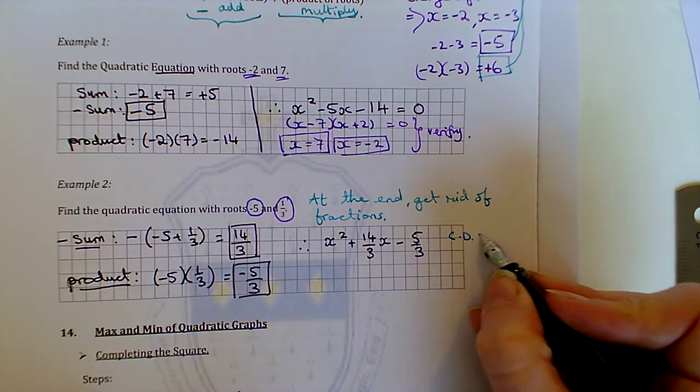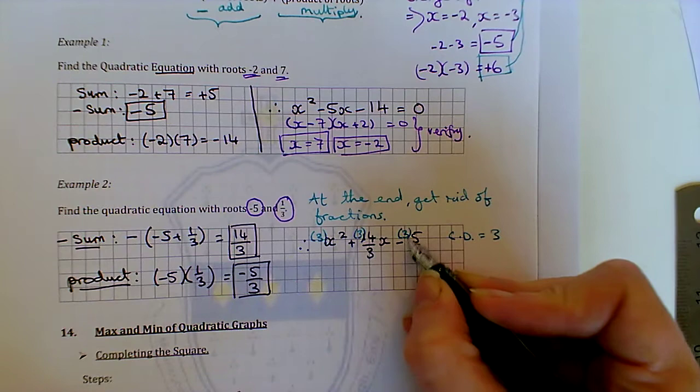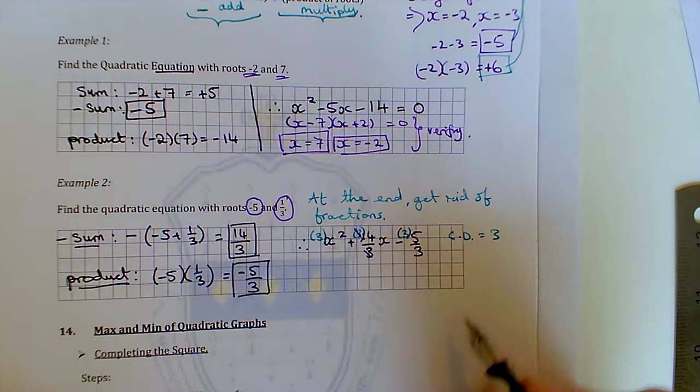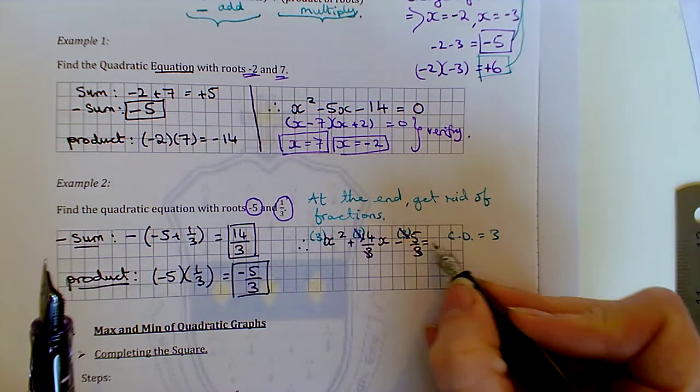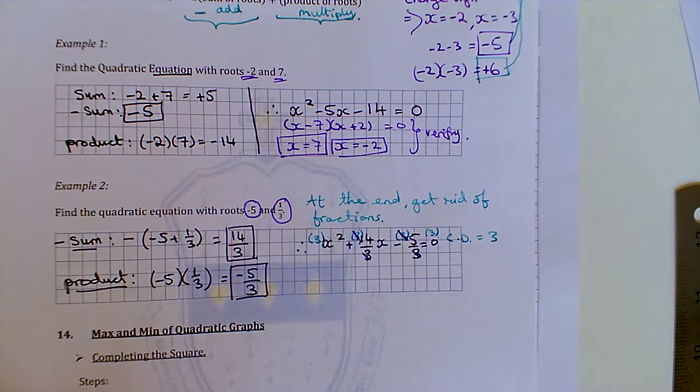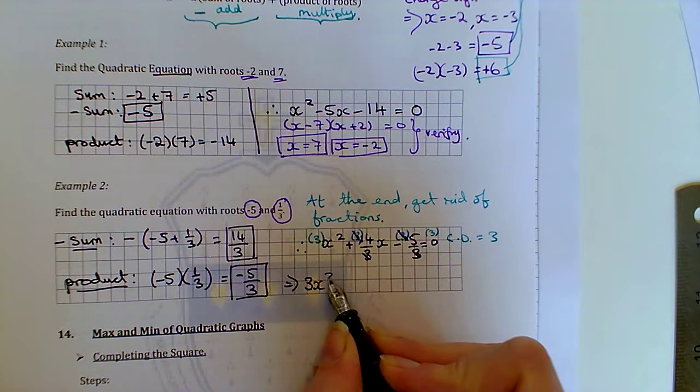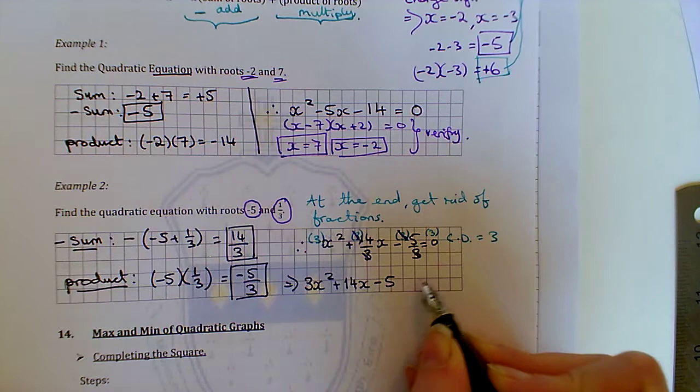Now, we must get rid of the fraction. Common denominator would be 3. So I'll multiply here by 3, here by 3, and here by 3. And nothing divides in here. 3 into 3 goes there and it cancels. 3 into 3 goes there. I apologize. Because it was a quadratic equation, it's equal to 0, which is why I'm able to do this multiplying across. So that means what we get is 3x² + 14x - 5 = 0.